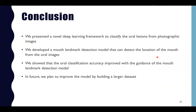In conclusion, we presented a novel deep learning framework to classify oral lesions from photographic images. We developed a mouth landmark detection model that can detect the locations of the mouth from an oral image, and showed that oral classification accuracy improved with the guidance of the mouth landmark detection model. In future work, we plan to improve the model by building a larger dataset with well-annotated labels, and we believe our proposed model can greatly contribute to the medical field and help in the early detection of oral cancer. That's all for my presentation. Thank you.